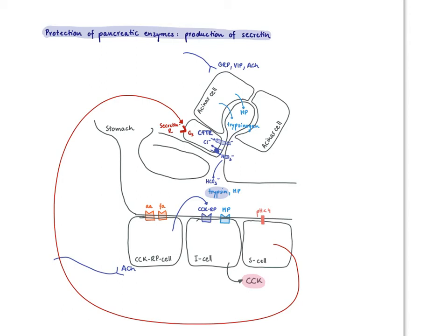Secretin is produced by the S cells. The S cell has pH-sensitive receptors on its surface, so when the pH drops and there's too much acid around that could destroy the enzymes, secretin is released.